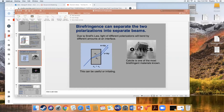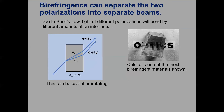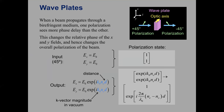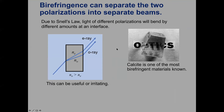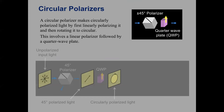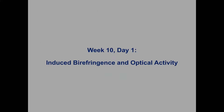What we're going to be talking about today is how we could take this property of birefringence that we see in crystals — that we use to build wave plates, like this calcite crystal — and how we could take materials that don't have this property and give them this property, making the index of refraction different along different directions. That is called induced birefringence, and that will lead into another topic called optical activity that we'll get to next class.